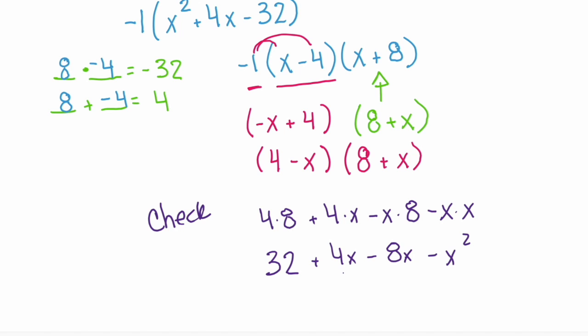And notice these two middle terms will simplify to the negative 4x. And we have 32 minus 4x minus x squared, which that's what we started with. So we know that our final answer in the format we were asked is 4 minus x times 8 plus x.